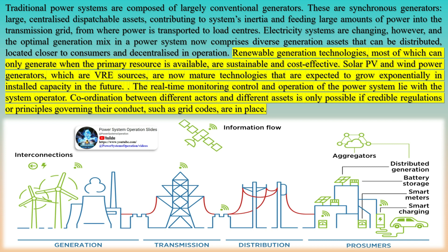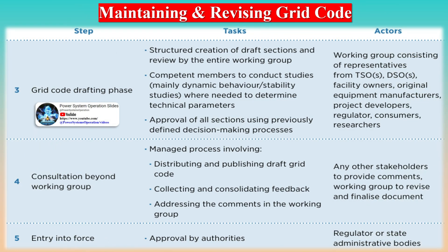There are also other ancillary services closely related to system operability and stability, such as power oscillation damping, subsynchronous resonance damping, congestion management, and grid loss compensation. These services contribute to maintaining the system's reliability and safe operation within predefined limits.